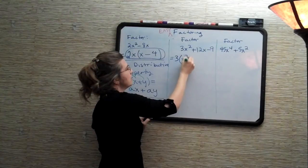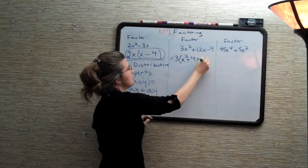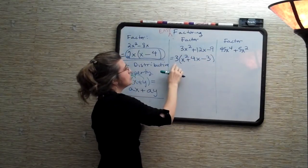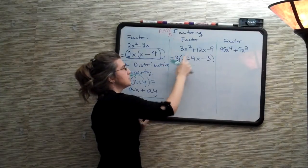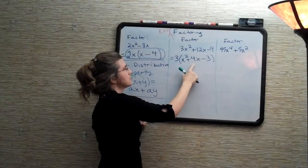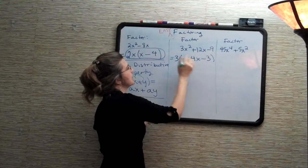That will be 3 times (x squared plus 4x minus 3). Since what times 3 is 3x squared? x squared. What times 3 is 12x? 4x. What times 3 is minus 9? minus 3.